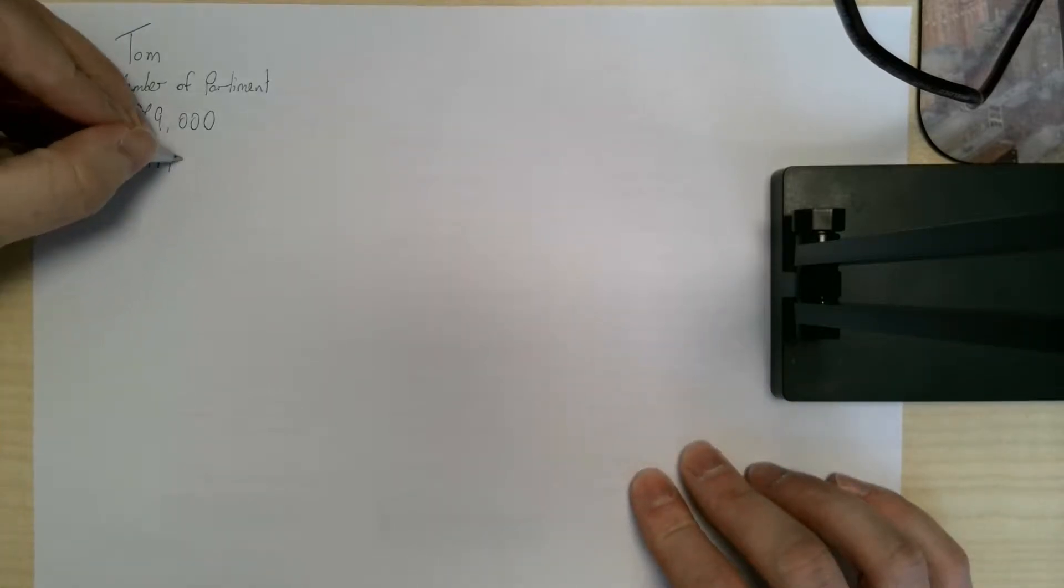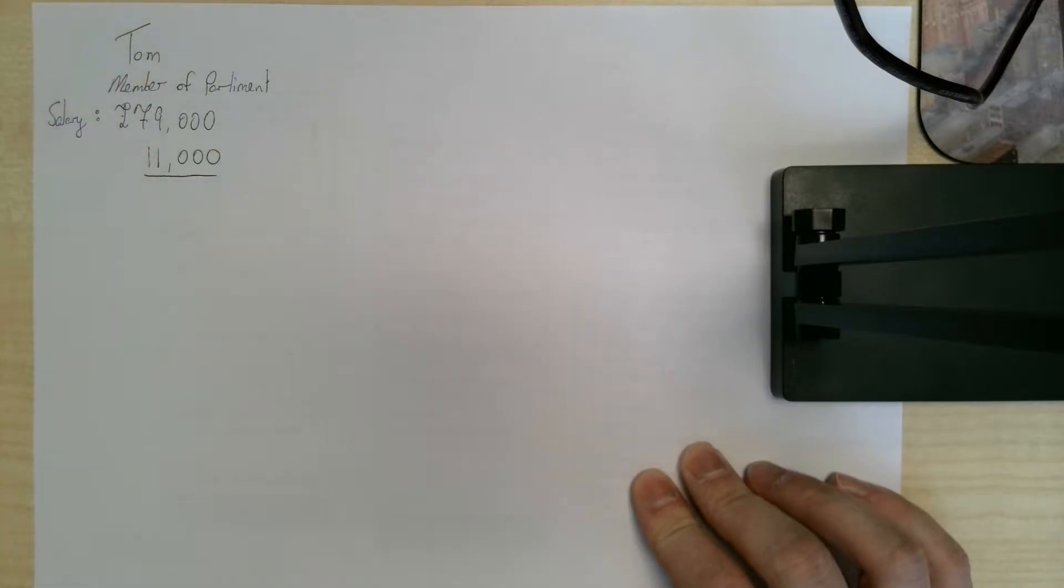As we saw from previous lessons, first thing we need to do is take away the £11,000 we're not charged tax on. So that leaves us with £68,000, and that's the part of his salary that is taxable.